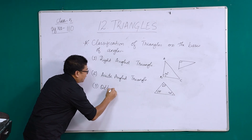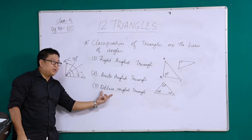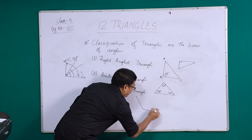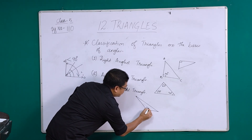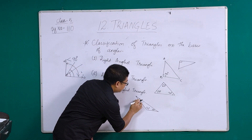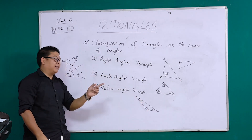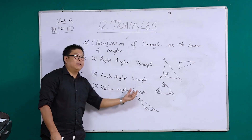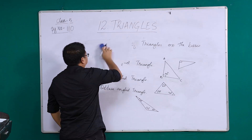The last type of triangle is an obtuse angled triangle. In an obtuse angled triangle, one angle will be greater than 90 degrees. For example, let's say one angle is 120 degrees, another is 30 degrees, and the third is also 30 degrees. We can see that 120 degrees is greater than 90 degrees. So this type of triangles which have one angle greater than 90 degrees are called obtuse angled triangles. With this, the classification of triangles on the basis of sides and angles is complete.